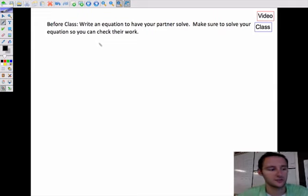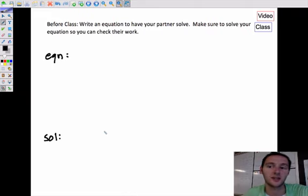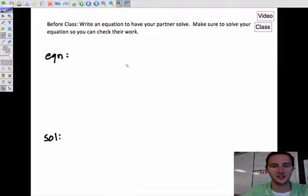Before class, here's how the before class assignments will go. You're going to write any equation that you want down here, and you are going to have someone else in the class solve it, and we'll facilitate that in class. For now, what you need to do is write your equation and have a solution as well. You can include fractions, decimals, you can try to make a special case if you want. The only thing I ask is don't do something really simple like 2x equals 4, because that's too easy and that's not going to help anybody learn. Try to come up with something kind of complicated, but not super impossible.